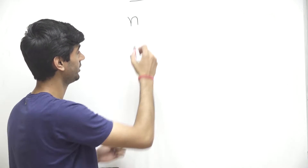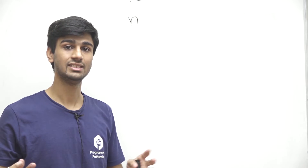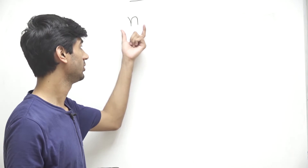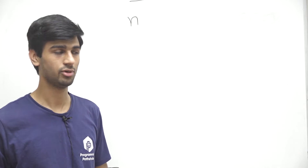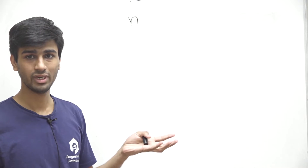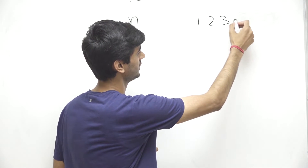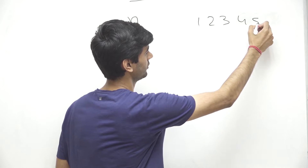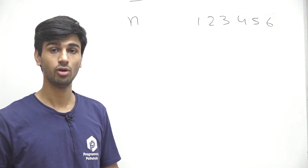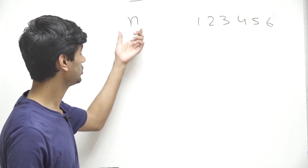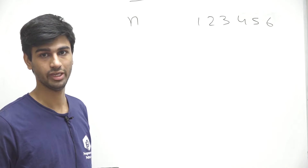The problem statement says that we will be given a number n and we have to find out the number of ways in which we can get a sum equal to n by throwing a dice one or multiple number of times. So if we throw a dice, the possible outcomes are one, two, three, four, five, or six. We have to find out the number of ways to get a sum equal to n by throwing the dice one or multiple times.